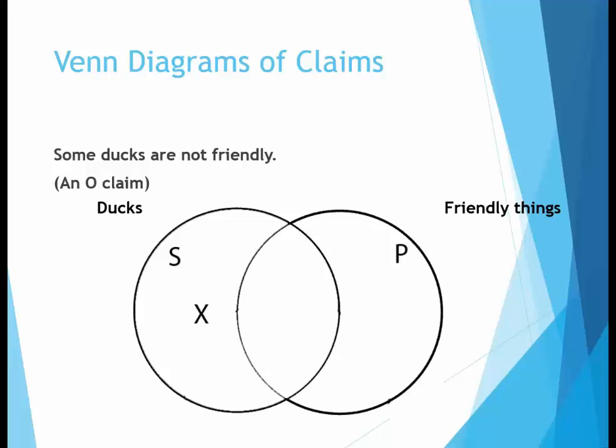In the Venn diagram for the O claim, the X is placed outside of the P circle and inside the S circle. This indicates that there is at least one duck that is not friendly. Like the I claim, the O claim doesn't tell us about all of either the S or P category, only about some of one category. The O claim tells us about some of the predicate because it says there is at least one thing that isn't part of it — in other words, at least one thing that isn't friendly.